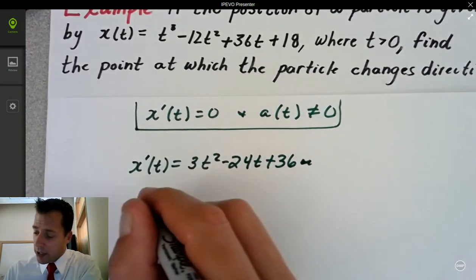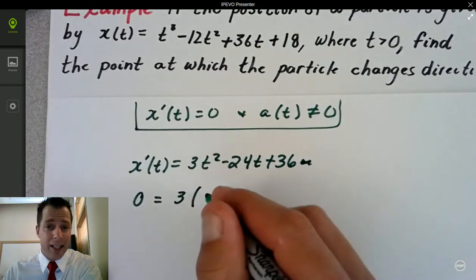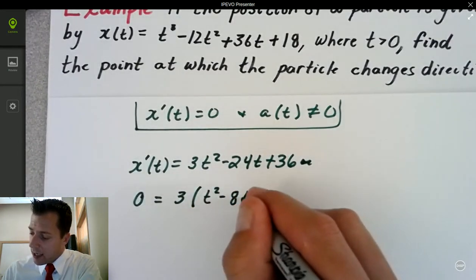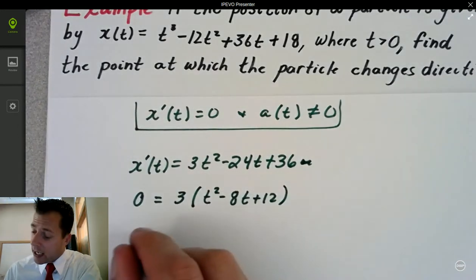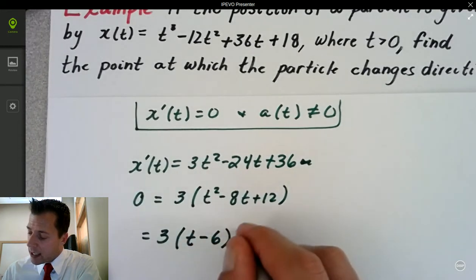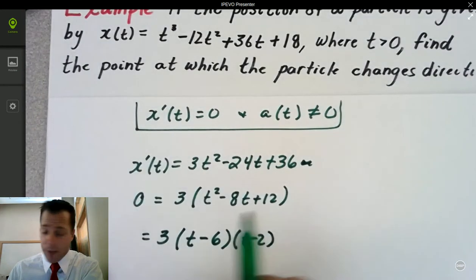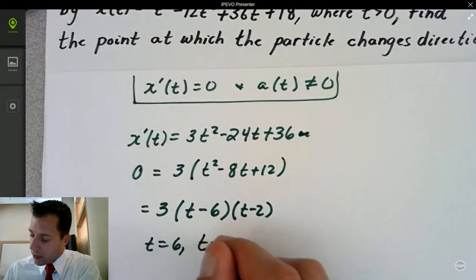It wants me to set that equal to 0, so I'm going to do that. Now I can factor out the 3 and clean this up a bit. So I get t squared minus 8t plus 12. I can continue to factor and I get 3 times t minus 6 times t minus 2. So t equals 6, t equals 2.